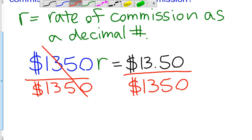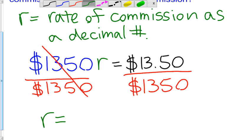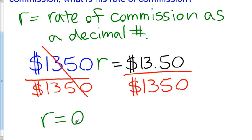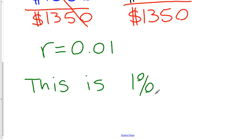So what does that give us? Using a calculator, $13.50 divided by $1,350 equals $0.01. So R is equal to 0.01. This is the rate as a decimal number, but when we ask for a rate of commission, it's typically given as a percentage. So what is this as a percentage? This is 1%.